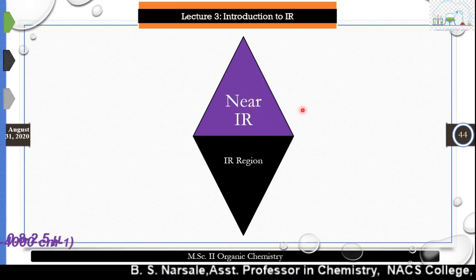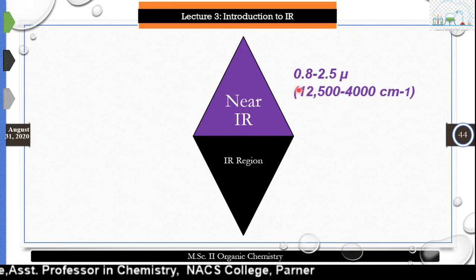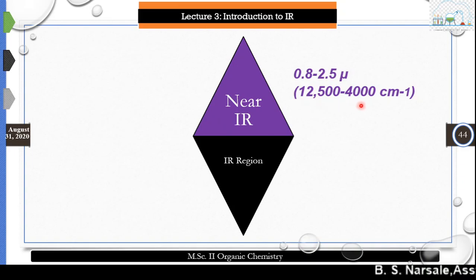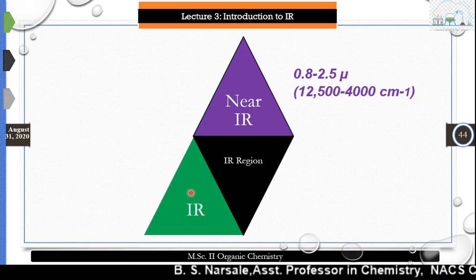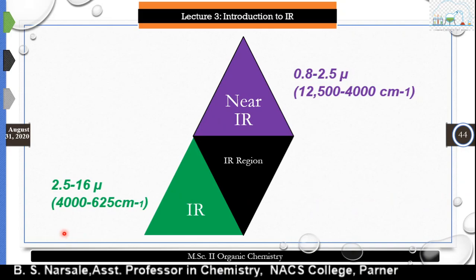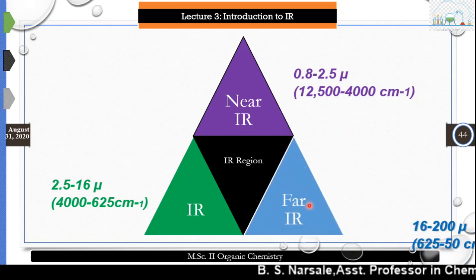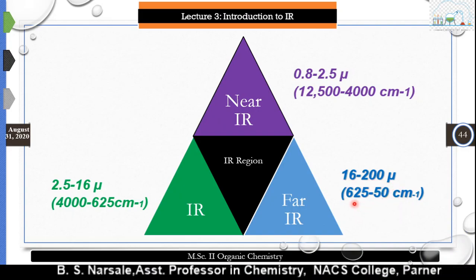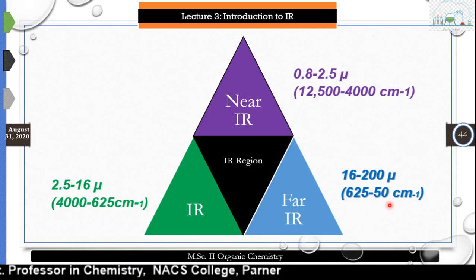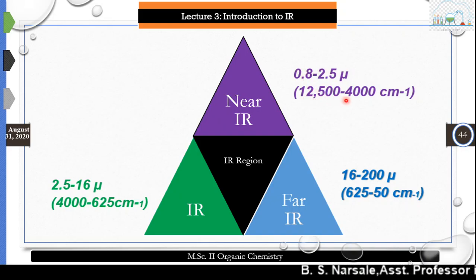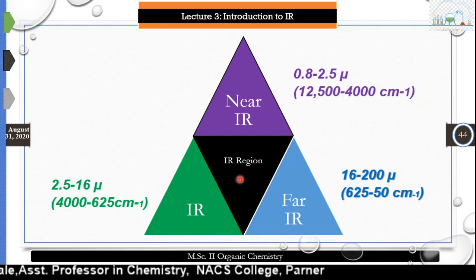The first is near IR, having a wavelength of 0.8 to 2.5 micrometers and wave number from 12,500 to 4,000 cm⁻¹. The second is the main IR, having 2.5 to 16 micrometers wavelength and 4,000 to 625 cm⁻¹ as wave number. The third region is far IR, having wavelength 16 to 200 micrometers and wave number 625 to 50 cm⁻¹. So from 50 cm⁻¹ to 12,500 cm⁻¹, the IR region is found.